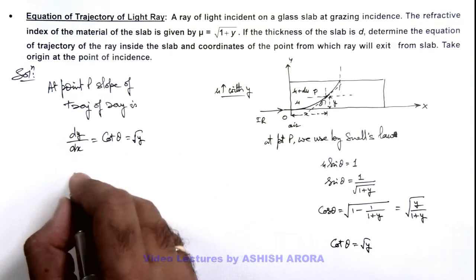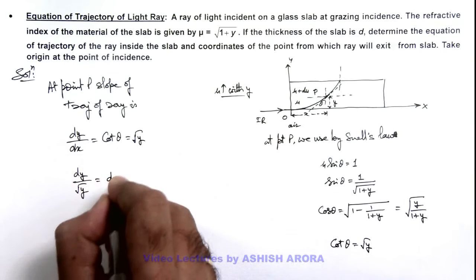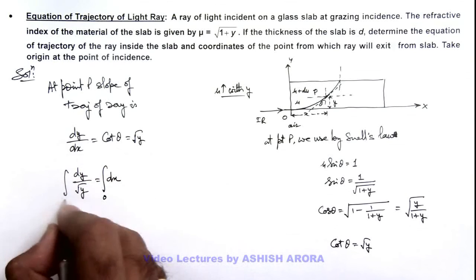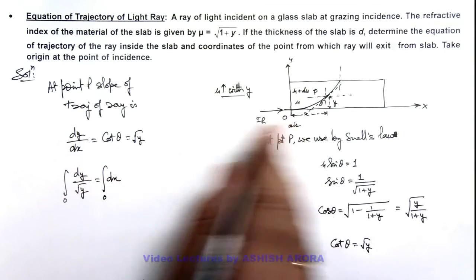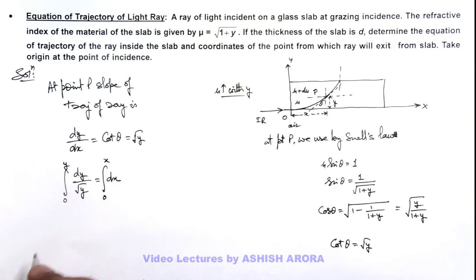And further, if we separate the variables, it is dy/√y = dx. And if we integrate it, at x = 0, y was zero when the light enters in glass slab, and at a position x its coordinate is y.